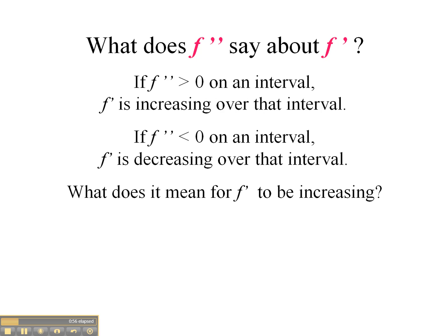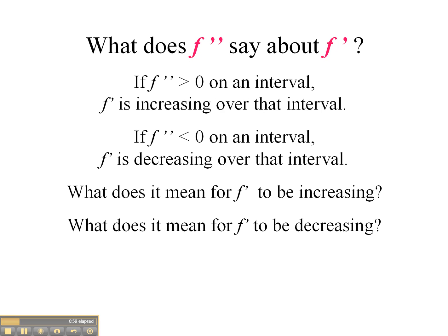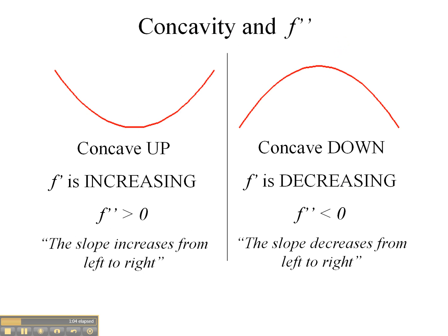So the big question is: what does it mean for the first derivative to be increasing, or what does it mean for the first derivative to be decreasing, and what does that tell us graphically? If we have a changing rate of change, that brings concavity into our graph. Our graph will be concave up if the first derivative is increasing, which is also when the second derivative is positive.